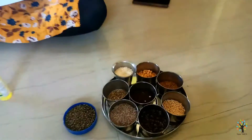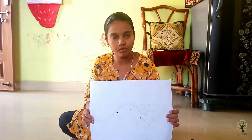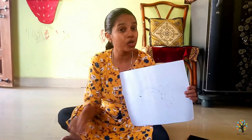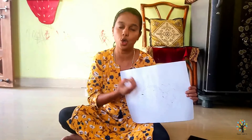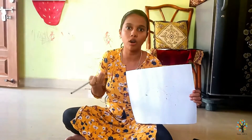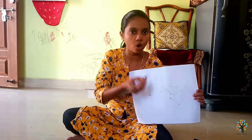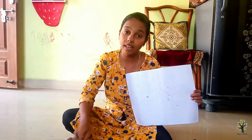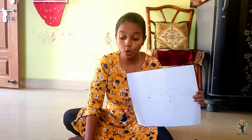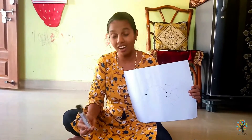After that, take your chart paper or your A4 sheet. You can use a pencil to draw whatever comes to your mind or whatever you want to draw. Then you can highlight it with a marker or black sketch, like this.